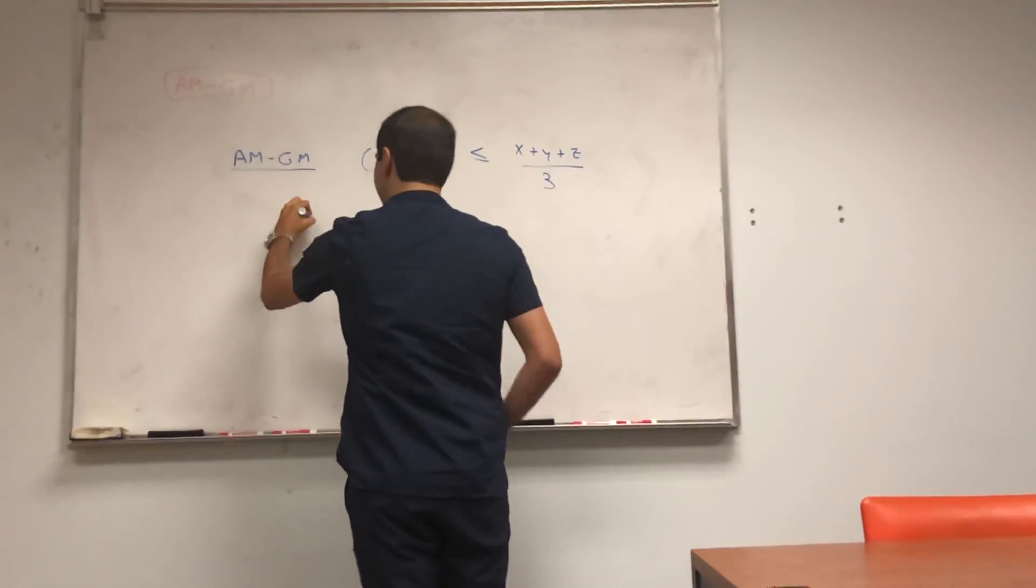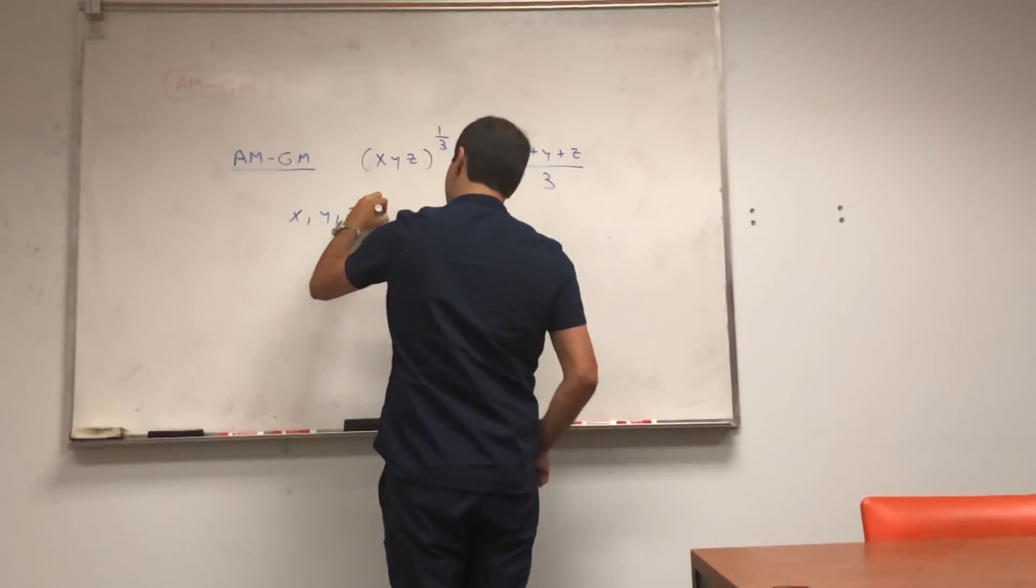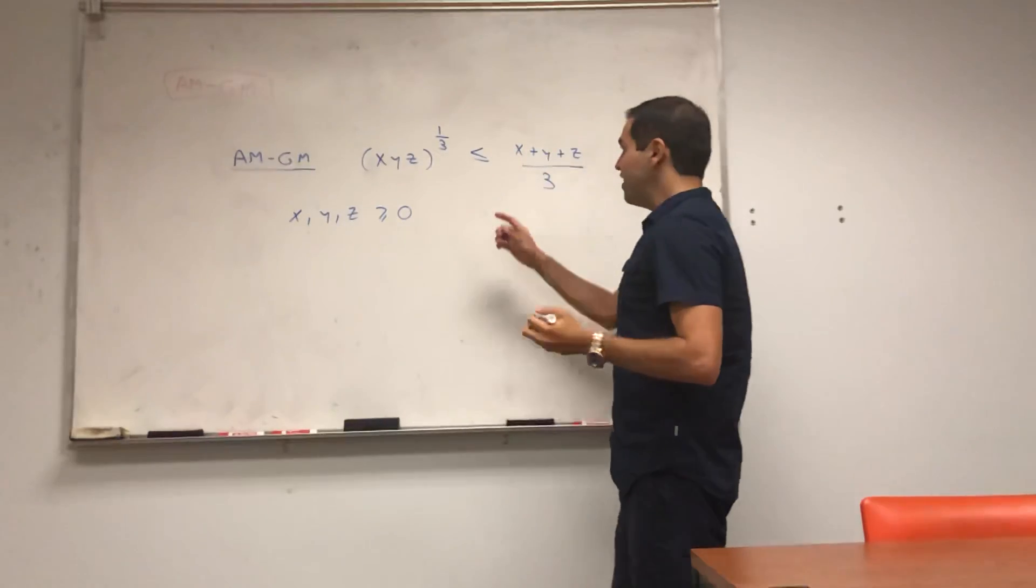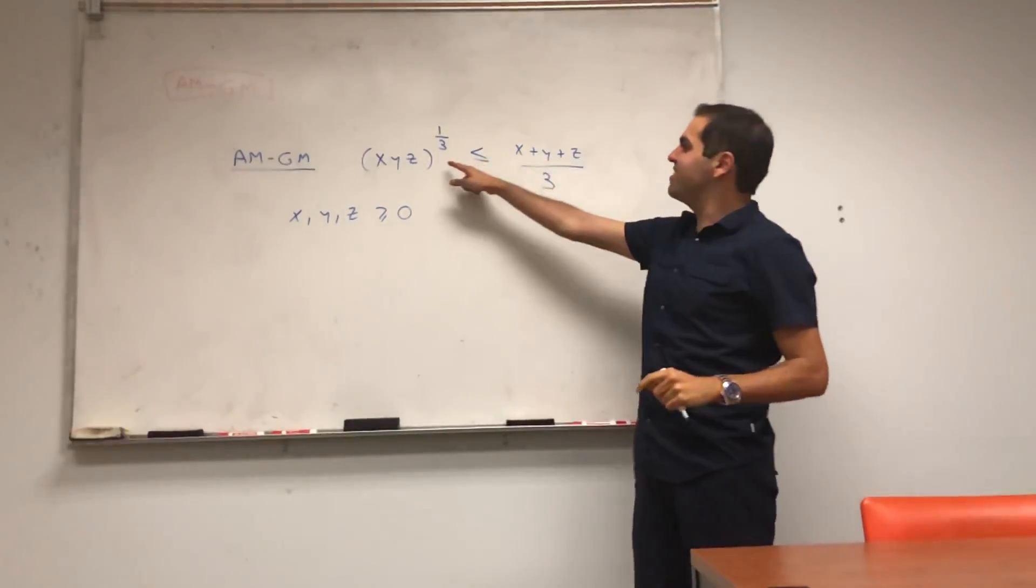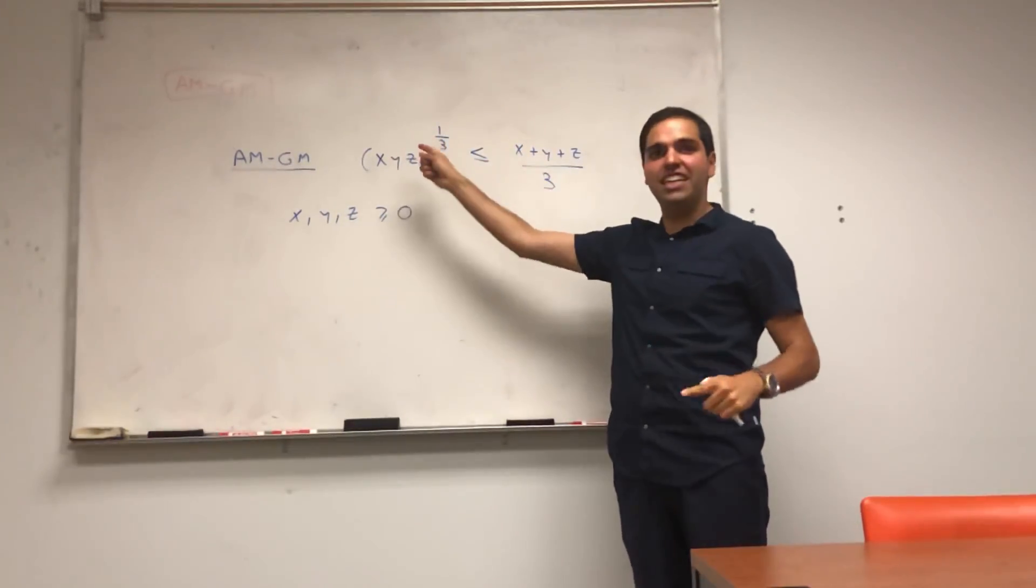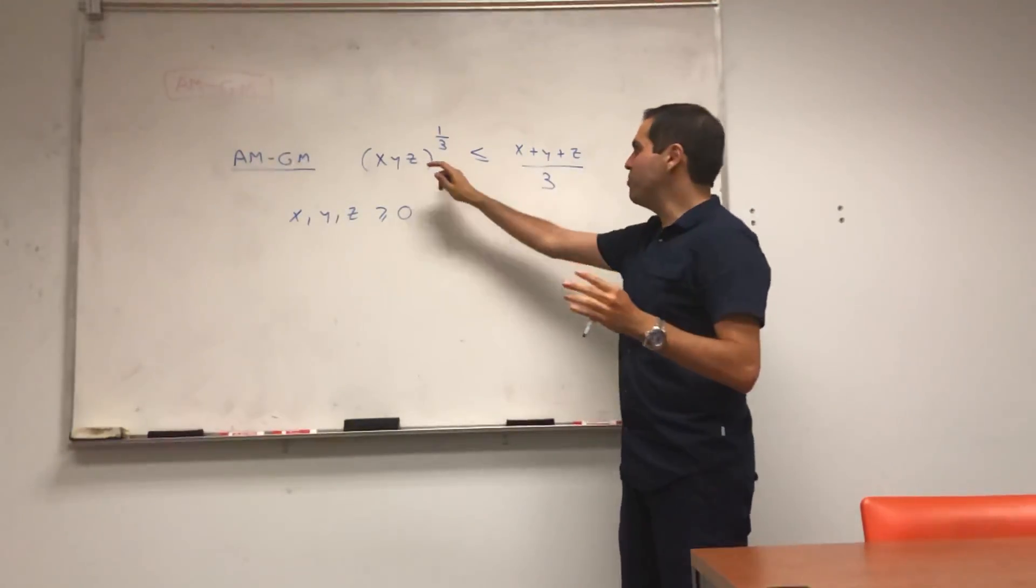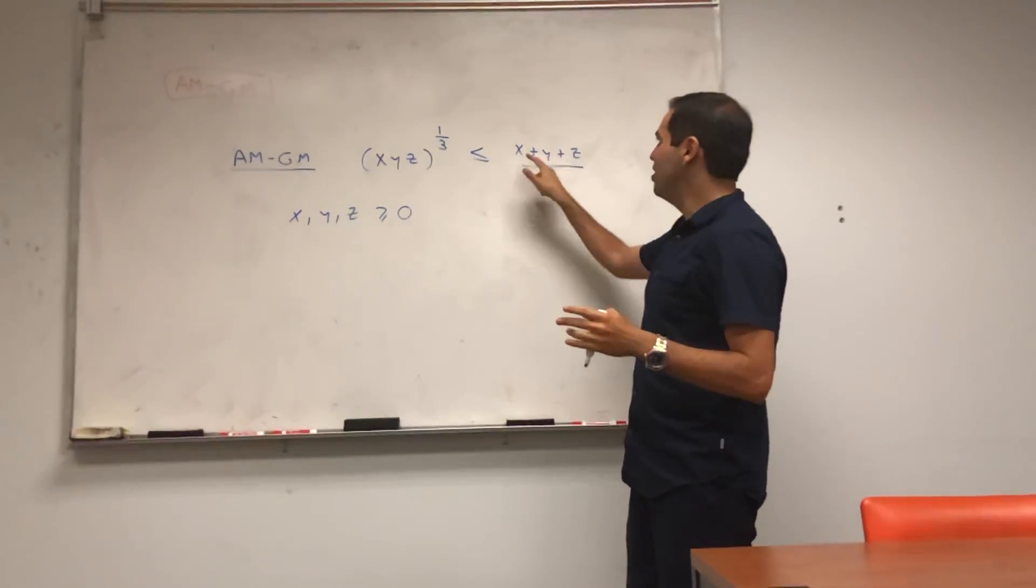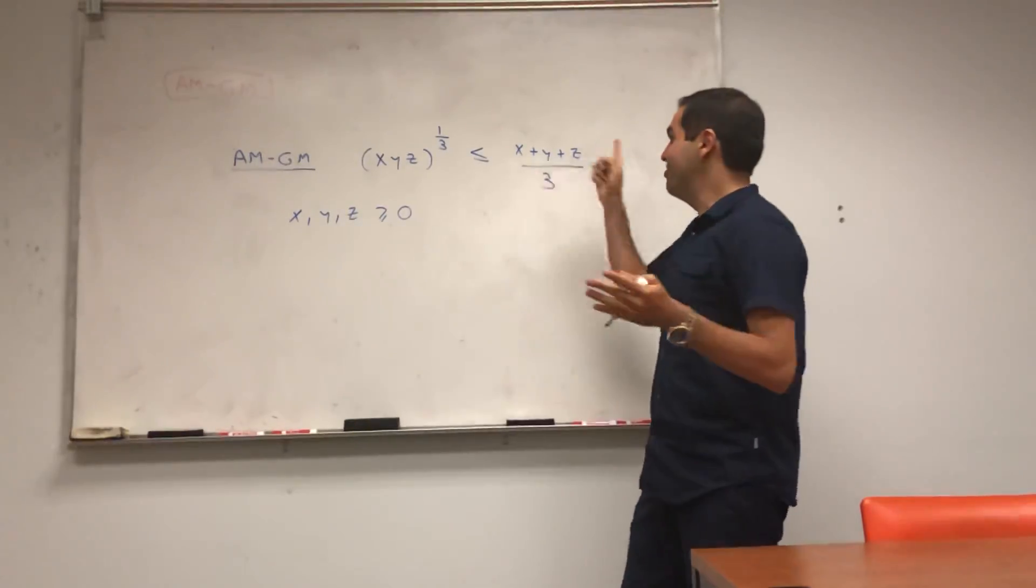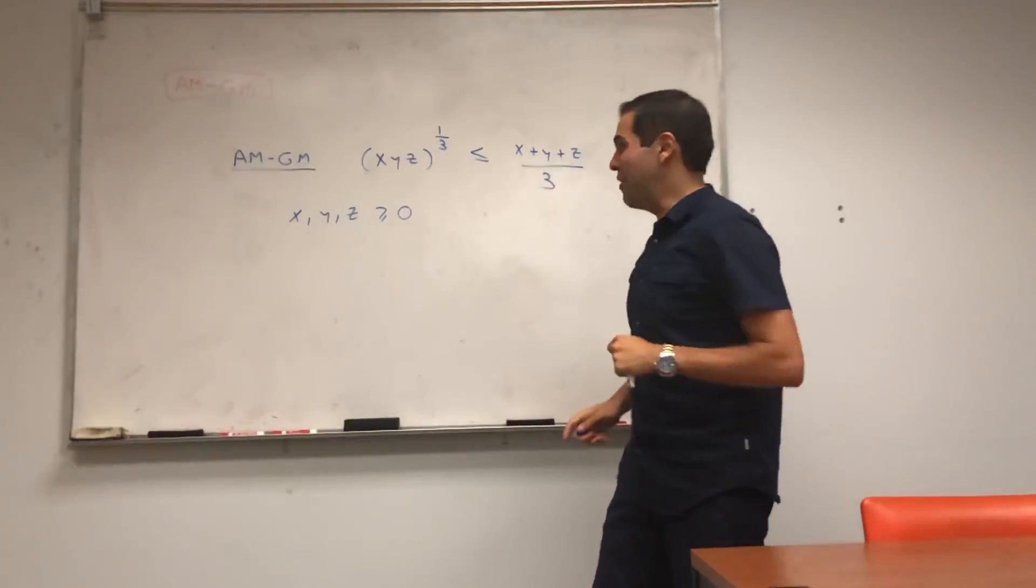Where XYZ are non-negative. And this is kind of neat. It says that the geometric mean, which is the cube root of the product, is always less or equal to the arithmetic mean, which is just the average as we know it.